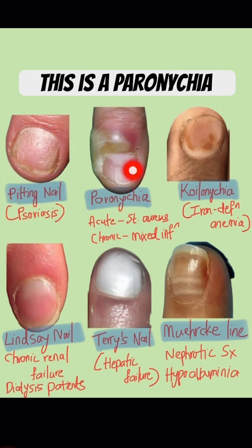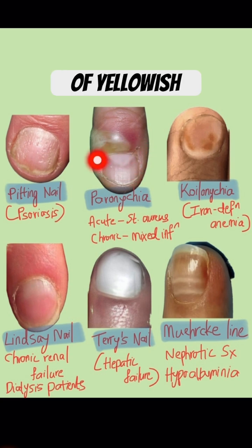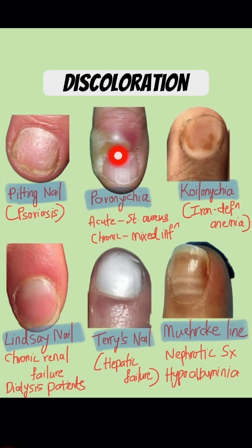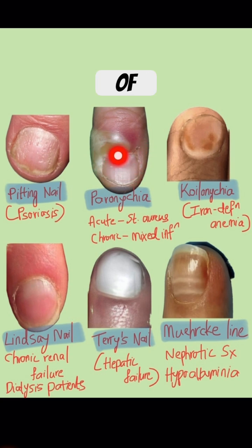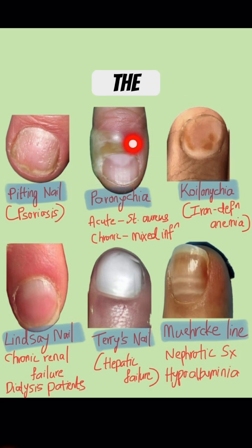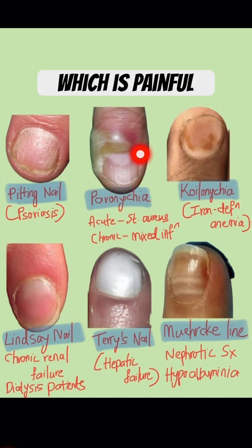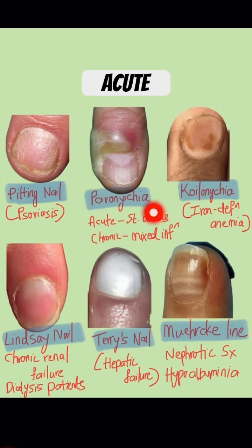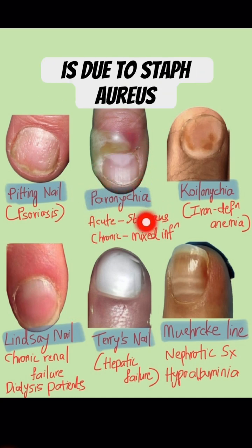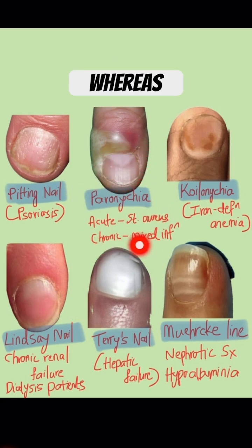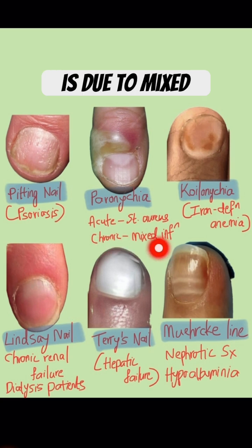This is a paronychia composed of yellowish discoloration indicating purulent discharge, mainly affecting the lateral fold of the nails, which is painful. Acute paronychia is due to Staph aureus, whereas chronic paronychia is due to mixed infection with fungus added.